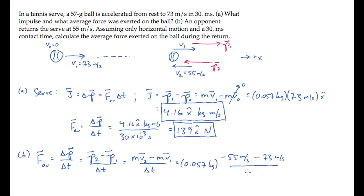And V1 is positive 73 meters per second. When you calculate, you find the average force is 243 newtons in the negative x hat direction, magnitude of 243 newtons directed to the left.